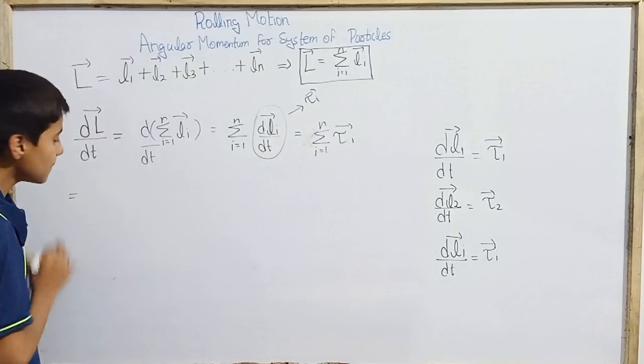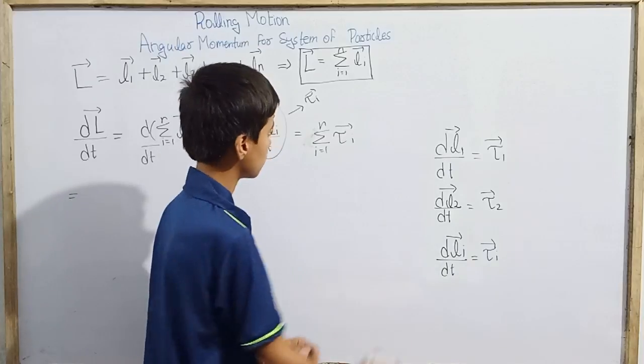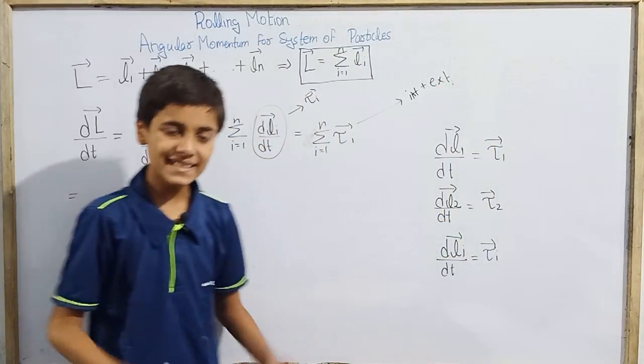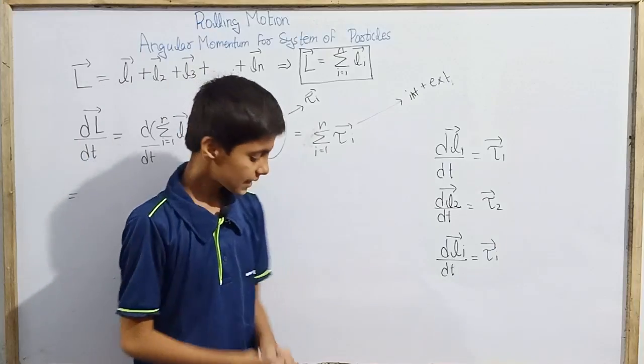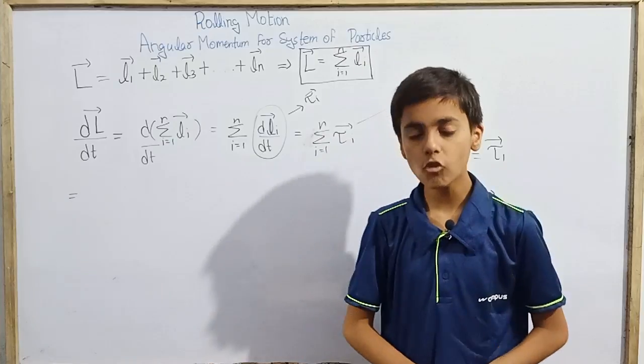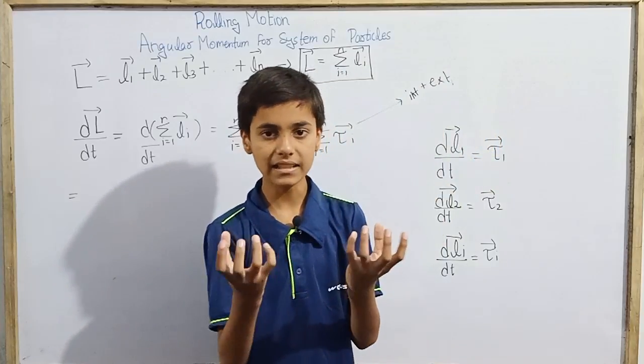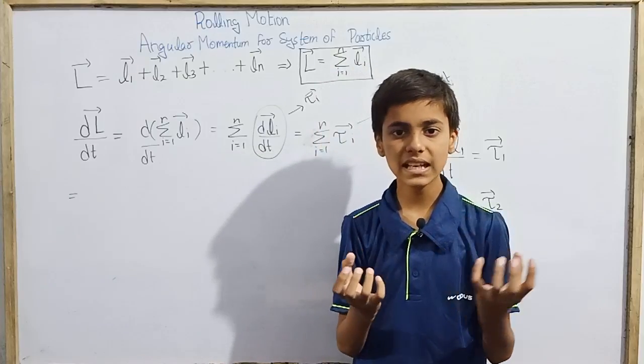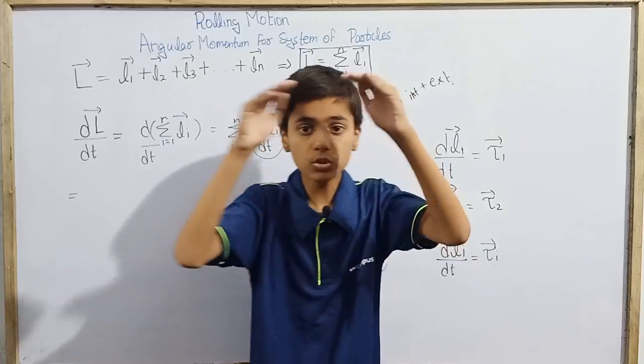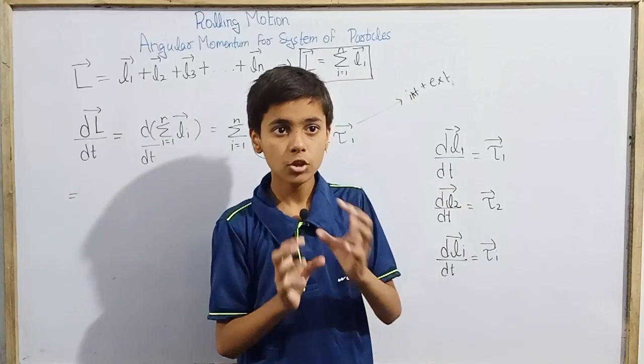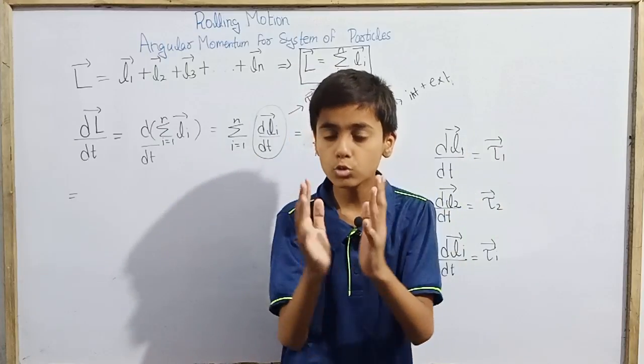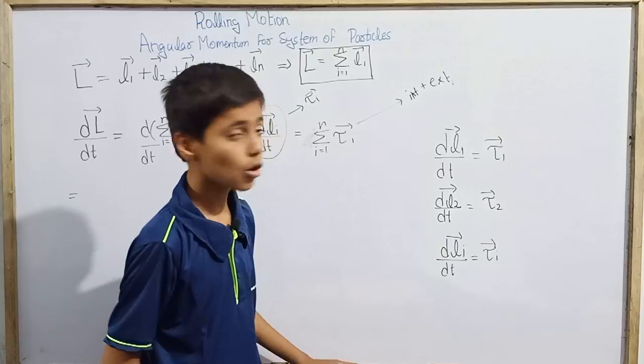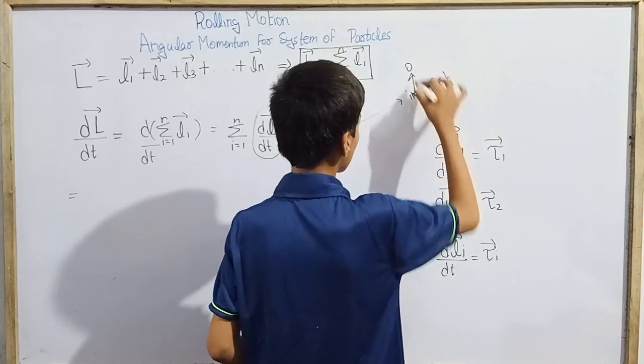Here, internal and external both will be there. We need to know that this will be internal torque plus external torque, total internal torque plus total external torque. But the thing here is that the internal torques, torque will be caused due to the forces. The internal forces of the system: one particle of the system is exerting force on another particle of the system. Here it is action-reaction pairs, Newton's third law of motion. But for the total system, when we assume the entire system, the total net force will be zero. When net force is zero internally, the net internal torque is also zero.